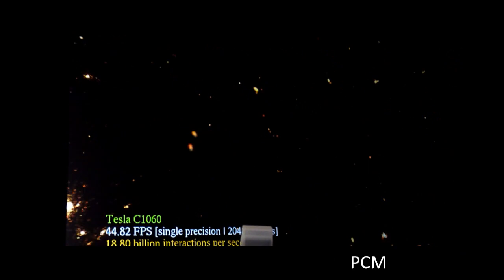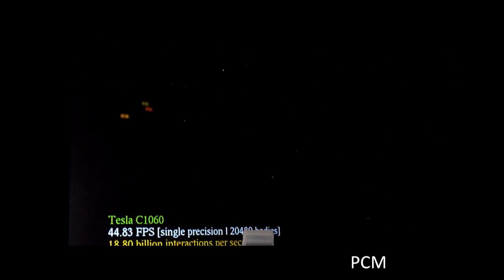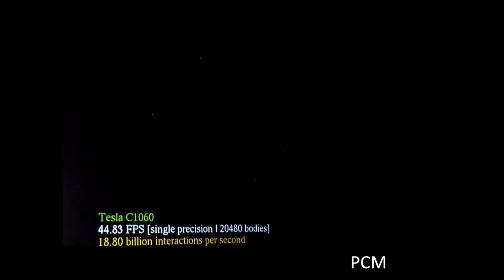This is our first-generation Tesla 1060. The current-generation Tesla 1060, and in this case it's running at about 44, 45 frames per second, and it's about 30 times faster speed-up over a CPU.